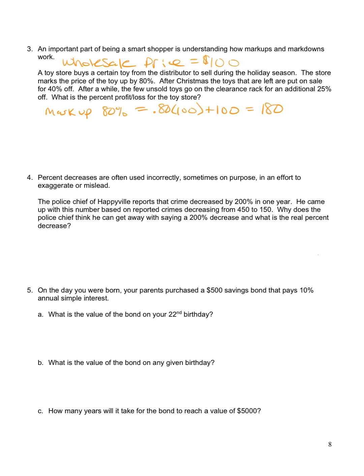Then we're going to put the toys that are unsold on sale for 40% off. So 40% off the original price of $180. So I'm going to take $180 minus 40% of $180, and that comes out to $180 minus $72, which is $108. So even at 40% off, the store is still making a profit of $8 because they paid $100. If they sold it at its original price, they'd make $80. When they sell it for 40% off, they make $8.